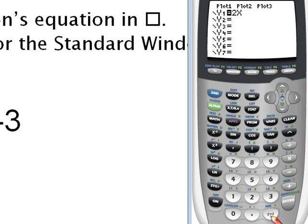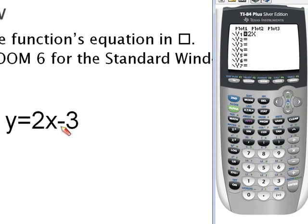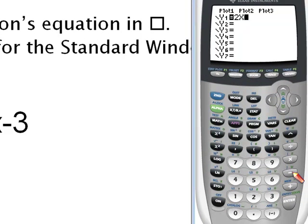Now some people use this key as opposed to this key. Remember this is the negative key and this is the subtraction key. So in our case we're doing 2x minus 3, or 3 is being subtracted from 2x, so use the subtraction key. If you use the negative key you're going to end up with an error.